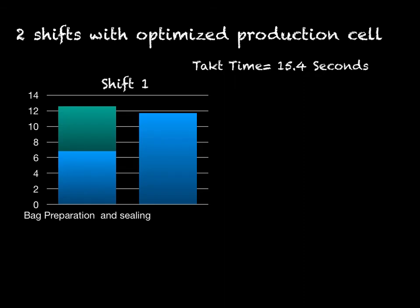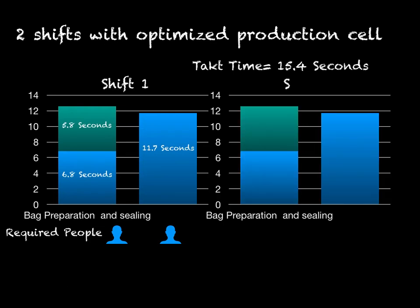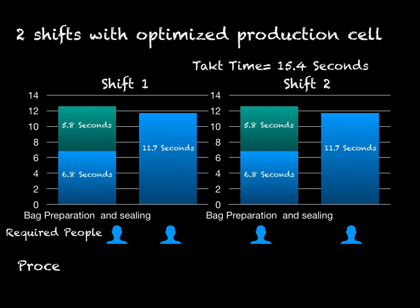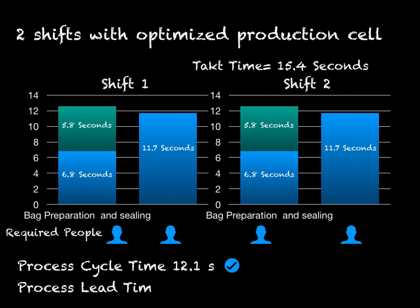Let's look at another solution. If we use two shifts, the takt time changes to 15.4 seconds. Shift one operates with two people and shift two operates with two people — four people overall. Since the cycle time of an optimal cell is 12.1 seconds, this is also an optimal solution for the problem.